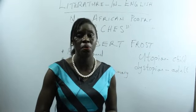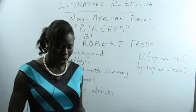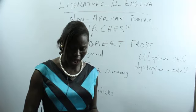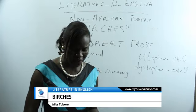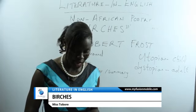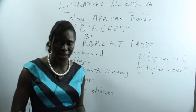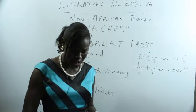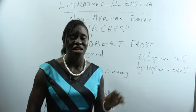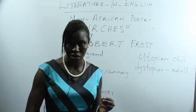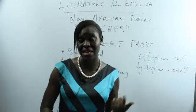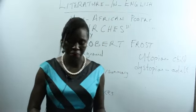We will also look at the poetic devices used in this poem. The poet makes use of simile. In lines 17 to 20, for example, it says 'you may see their trunks arching in the woods, years after, trailing their leaves on the ground like girls on hands and knees that throw their hair.' The poet also makes use of hyperbole in lines 9 to 13, where a heap of broken enamels from the birch is compared to the inner dome of heaven. The heap of broken enamel pieces from the birch are compared to the inner dome of heaven — the idea is hyperbolic in nature, an exaggeration that is trying to paint the beauty of the birch.